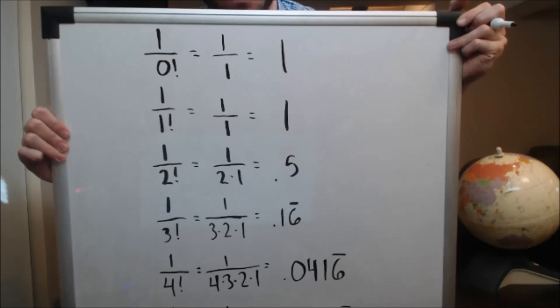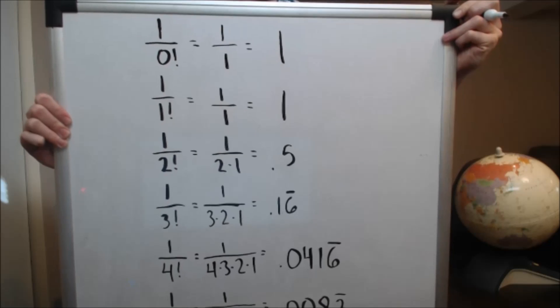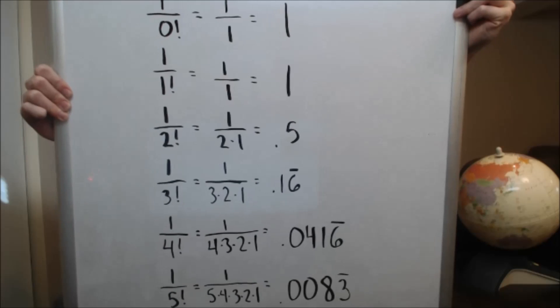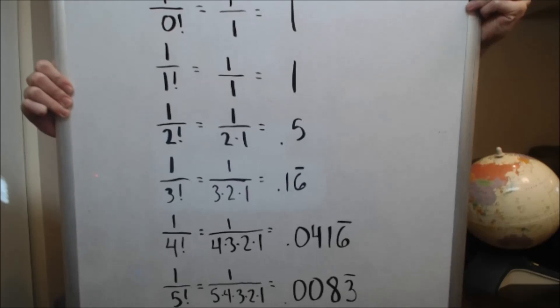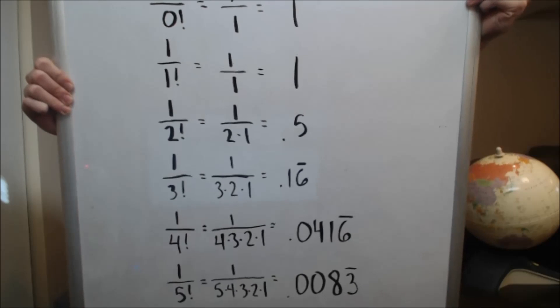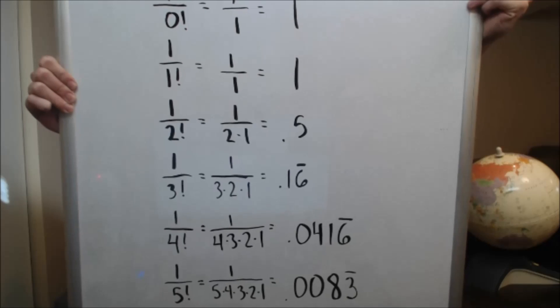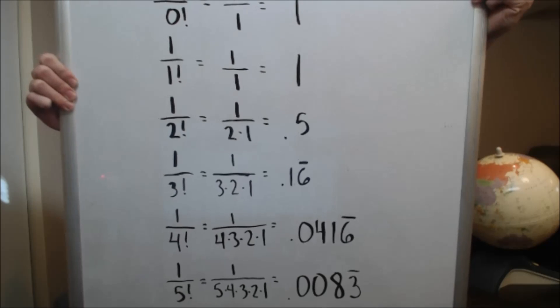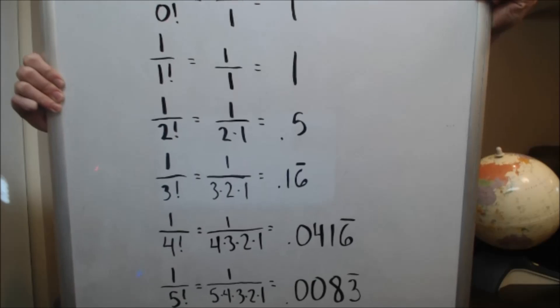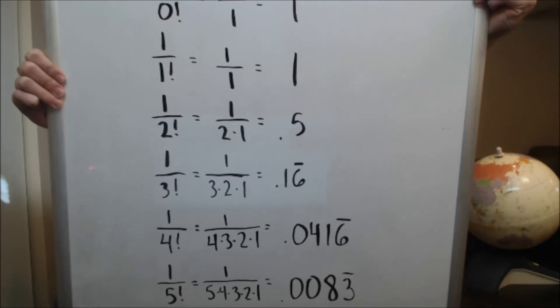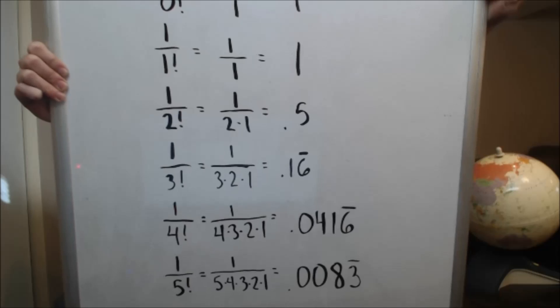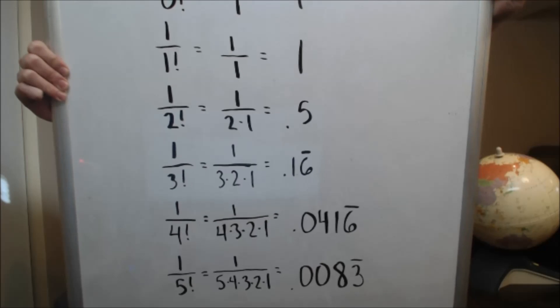Now, consider 1 over 1 factorial. 1 factorial, that's just 1. 1 over 1, that's 1. Now, consider 1 over 2 factorial. 1 over 2 times 1, because 2 factorial is 2 times 1. Well, that's just 1 over 2, that's 0.5. Now, consider 1 over 3 factorial. 1 over 3 times 2 times 1, that is 1 over 6. So, that's 0.16 repeating. Just the 6 part is repeating. Consider 1 over 4 factorial. That's 1 over 4 times 3 times 2 times 1, 0.0416, and then the 6 is repeating.